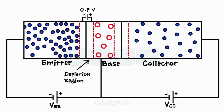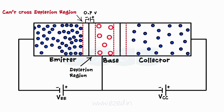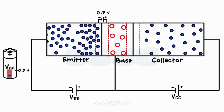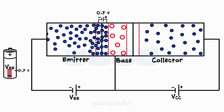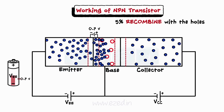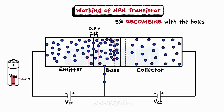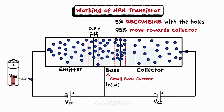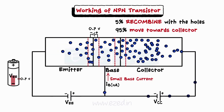Electrons reach the depletion region but can't cross it. As we increase the voltage VEE above the junction potential value, the electrons successfully cross the depletion region and enter the base. The base is very lightly doped with P-type impurities, so it contains very few holes as majority carriers. Out of all the electrons that cross the junction, only 5% recombine with the holes in the base, constituting the base current, which is very small in the nano-ampere range.